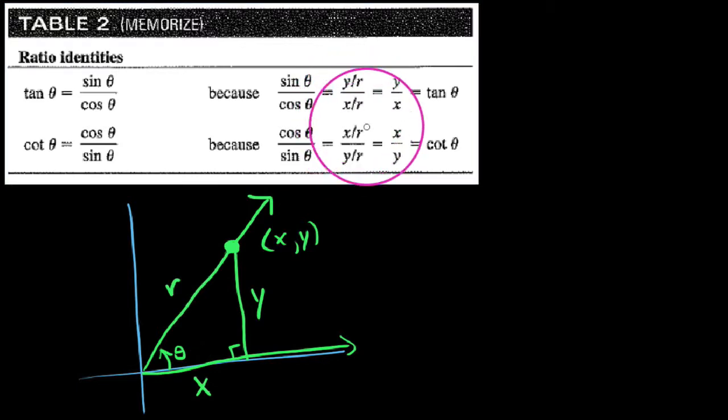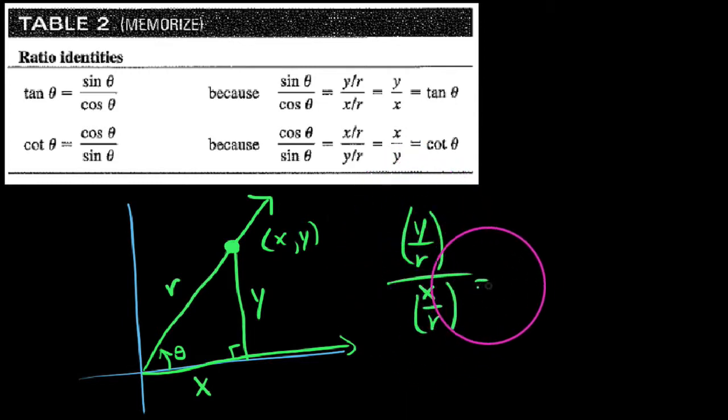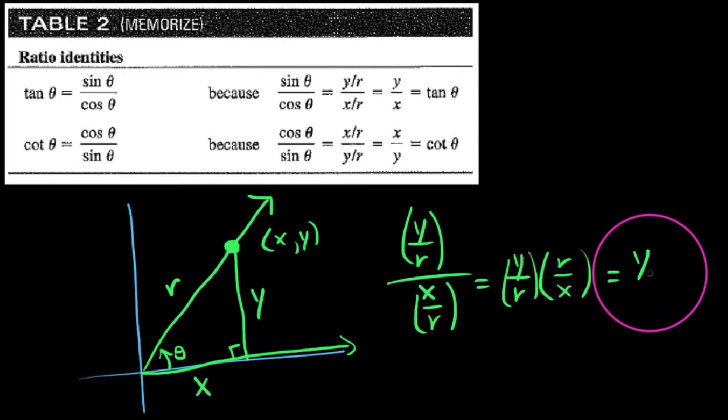We say y over r divided by x over r. We'll do some fractional division here. Y over r divided by x over r is the same thing as multiplying by the reciprocal. We get y over r times r over x, and we end up with y over x.